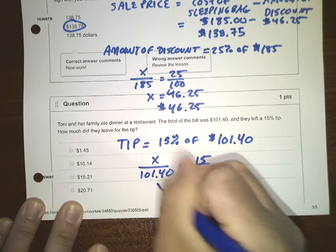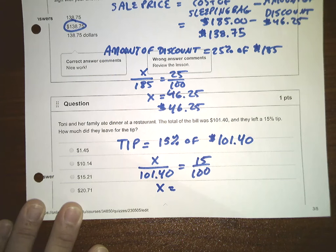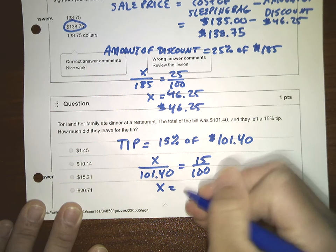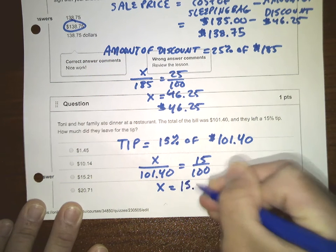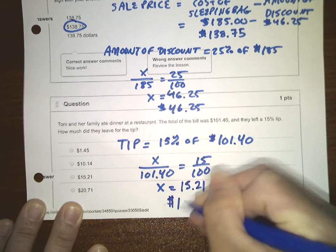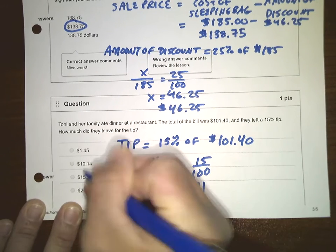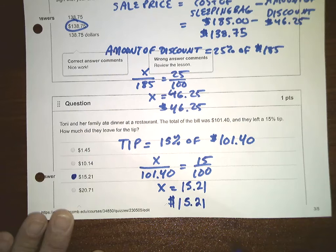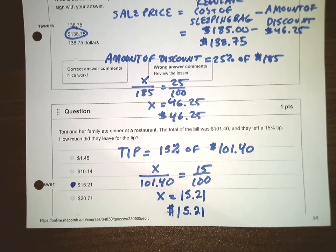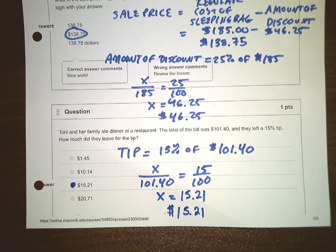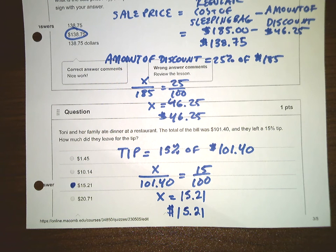X is $15.21. So that was the amount of the tip that Tony and their family left. I would normally leave at least 20%, so you can tell Tony's family I said that they were cheap.